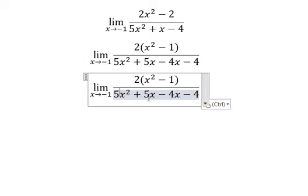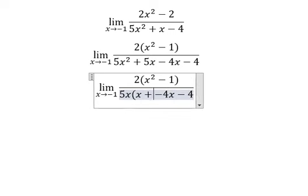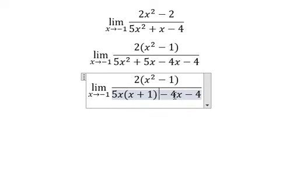Next, for 5x we can do factorization. We have 5x times (x + 1), and this one is about negative 4 times (x + 1).